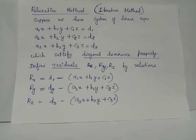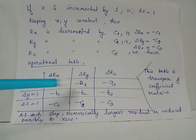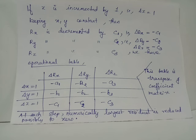If we consider the coefficient matrix from the three equations, the first row is (minus a1, minus b1, minus c1), the second row is (minus a2, minus b2, minus c2), and the third row is (minus a3, minus b3, minus c3). Taking the transpose of this coefficient matrix gives the entries for the operational table, so we can directly use the transpose without re-deriving the incremental cases each time.